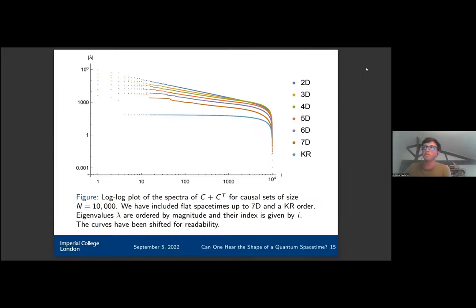Here we've simply plotted the spectra of different causal sets. These causal sets have 10,000 elements and they are embedded into manifolds for flat spacetime. We have hypercubes from 2D to 7D as well as a K order. What we can see is because this is a log plot and we see straight lines, we have power laws. In particular, we can see that the K order behaves differently from all the other spectra. So it seems to indicate that we are able to distinguish manifold-likeness from the spectrum alone.